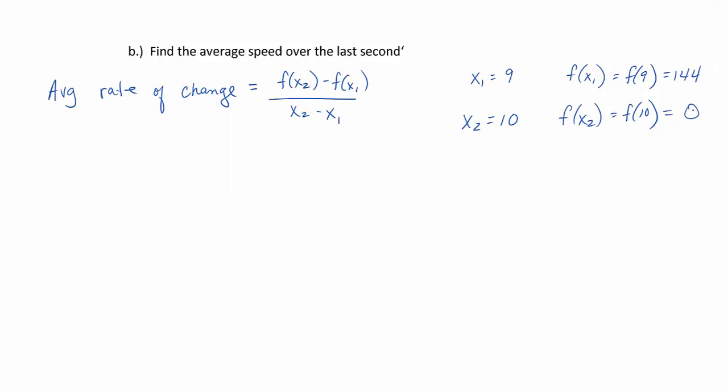We have all the information we need, and now we just need to plug it in. Average rate of change will be 0 - 144 over 10 - 9. Negative 144 over 1. Our average rate of change is negative 144, and our unit is feet per second.